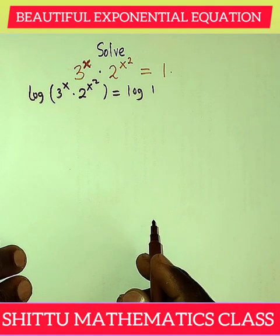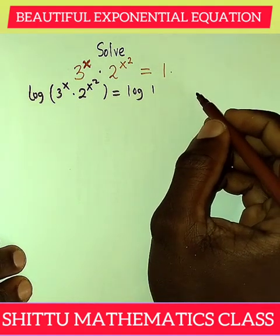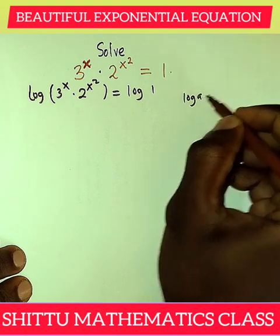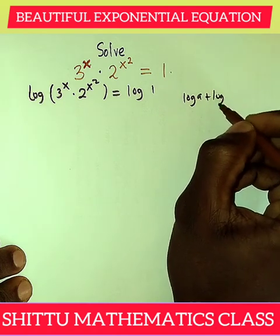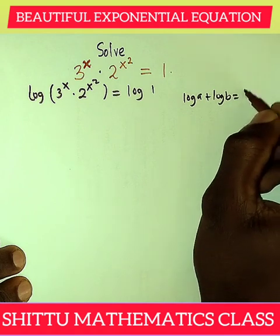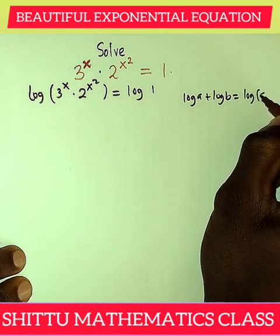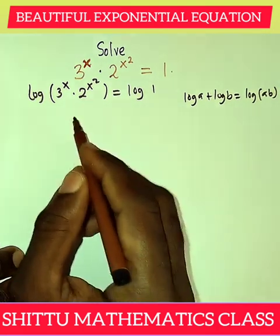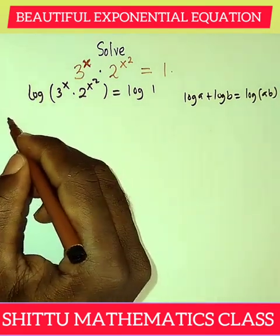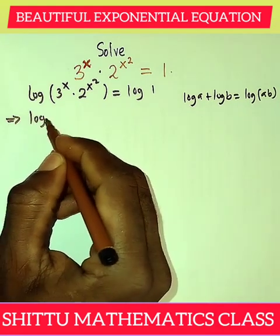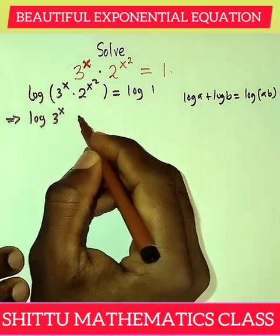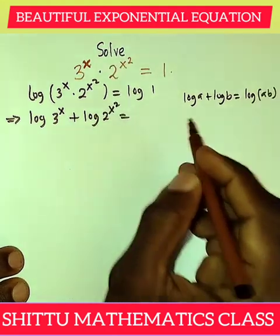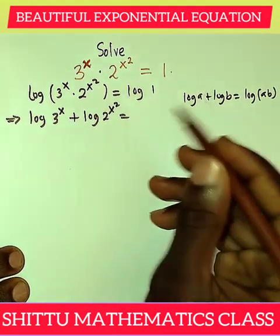From here, we are going to use one of the properties — the law of logarithm — that says log A plus log B equals log AB, that is multiplication. So since we have multiplication here, this can be split: log 3 to power x plus log 2 to power x squared equals log 1.